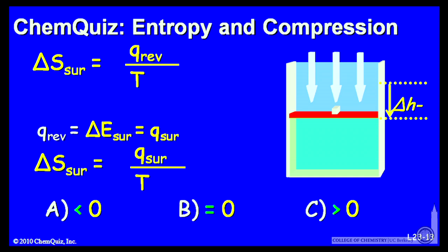So energy of the surroundings divided by the temperature of the surroundings, a positive, an increase in entropy in the surroundings. So that's greater than 0. The correct answer here is C.